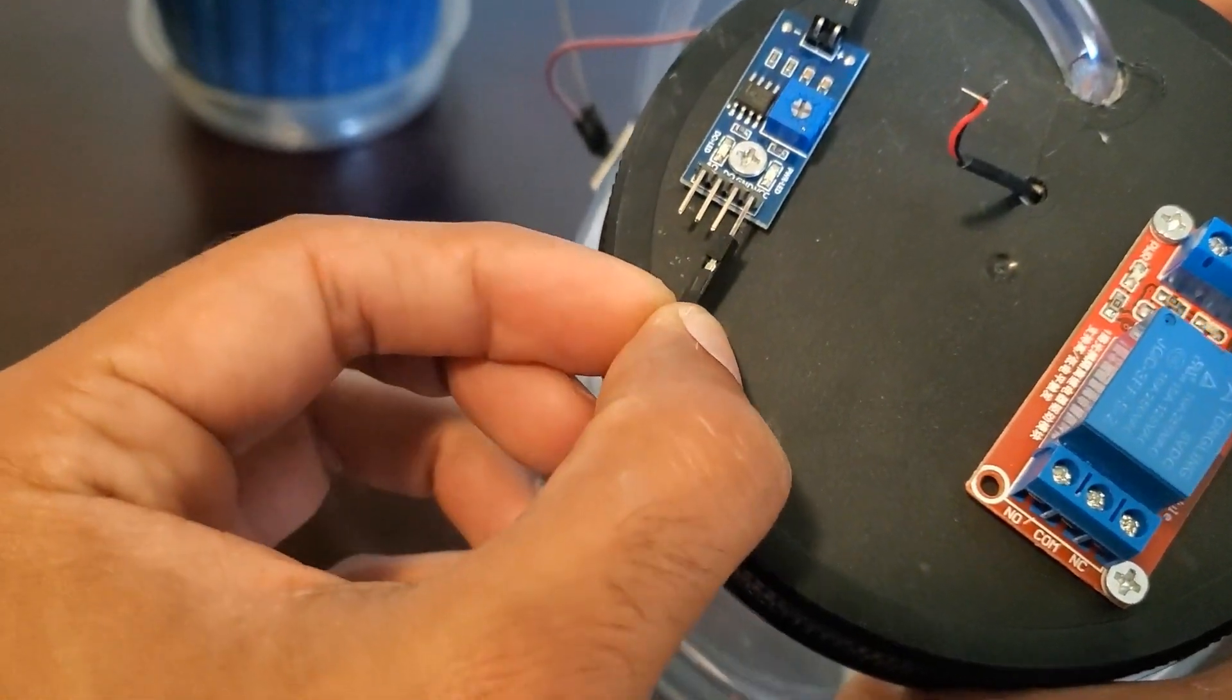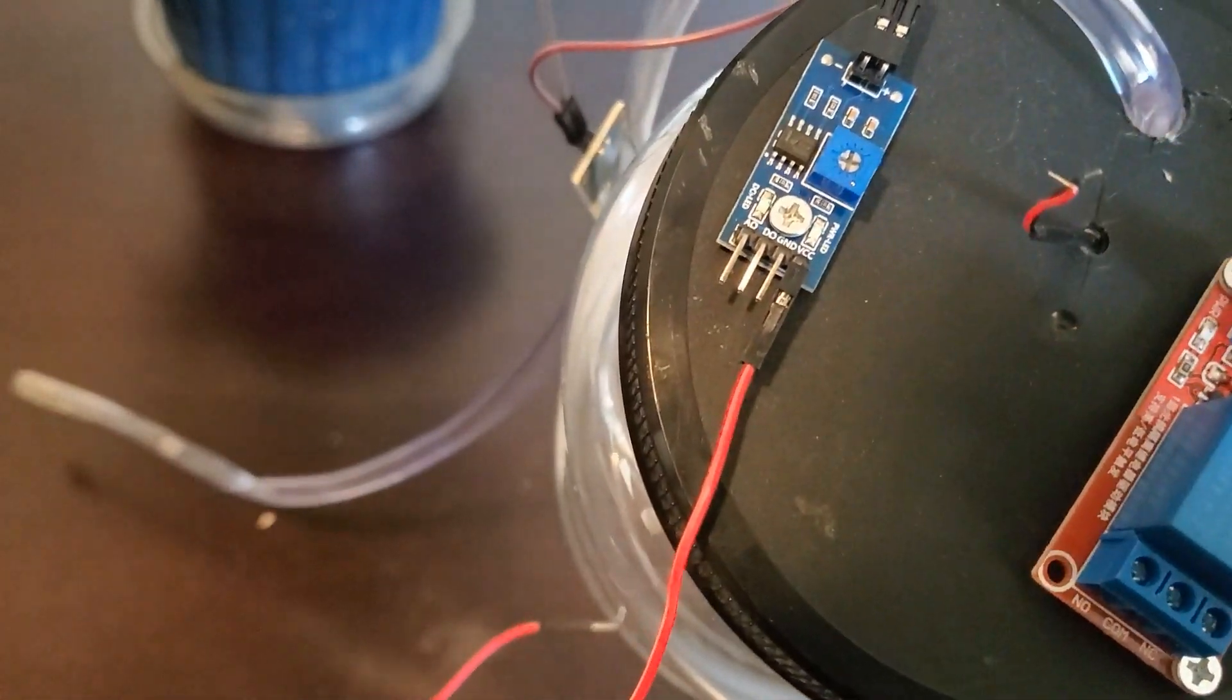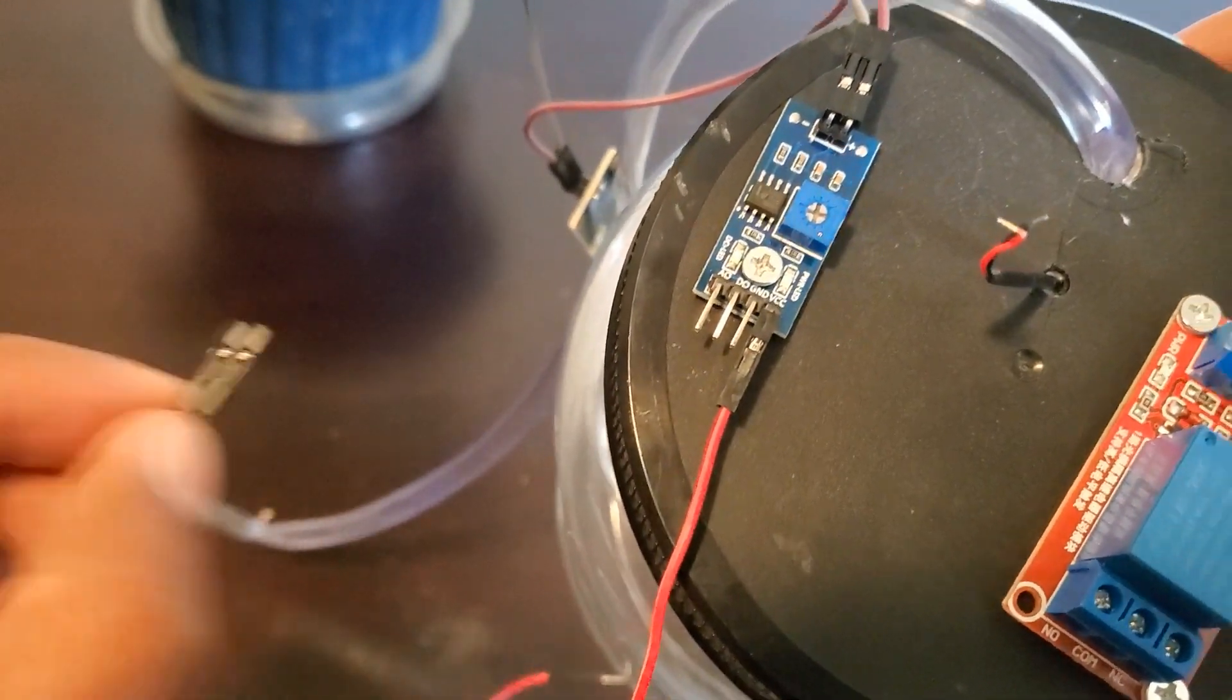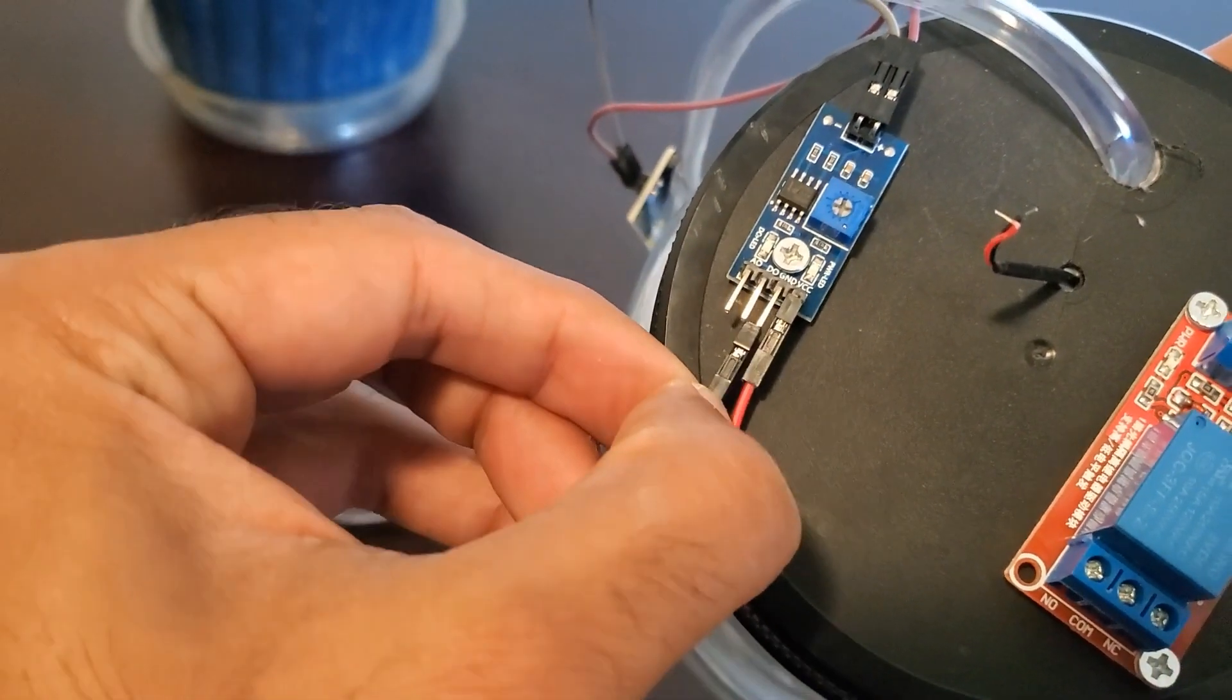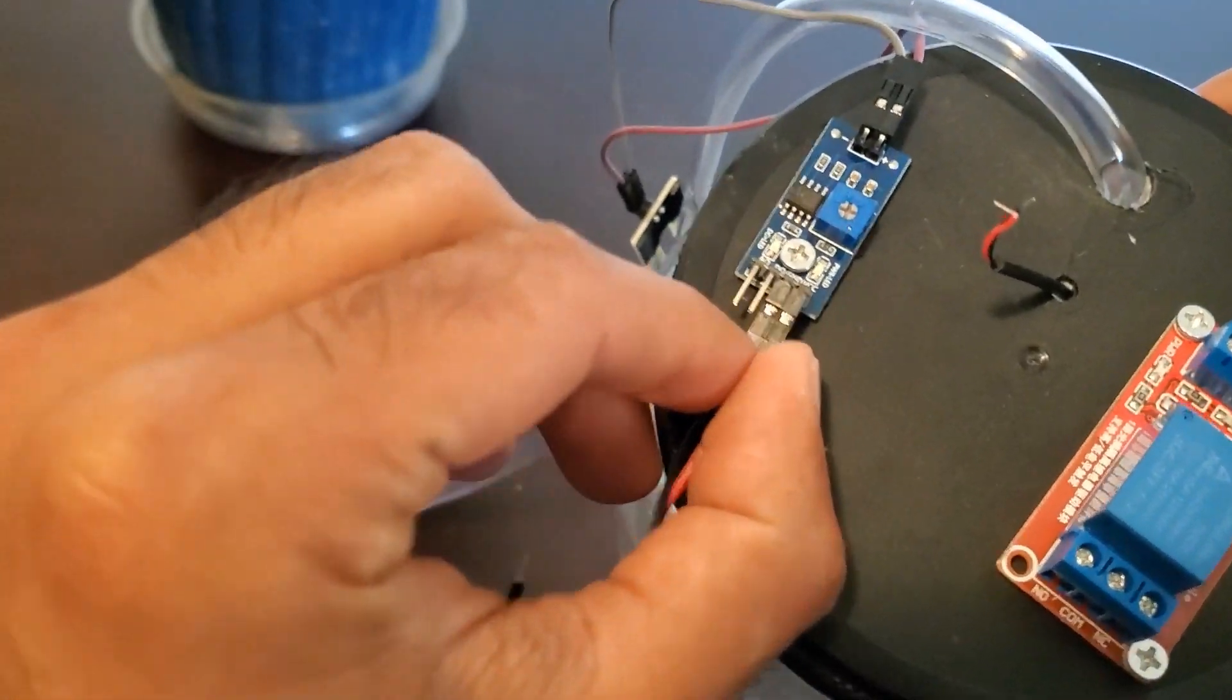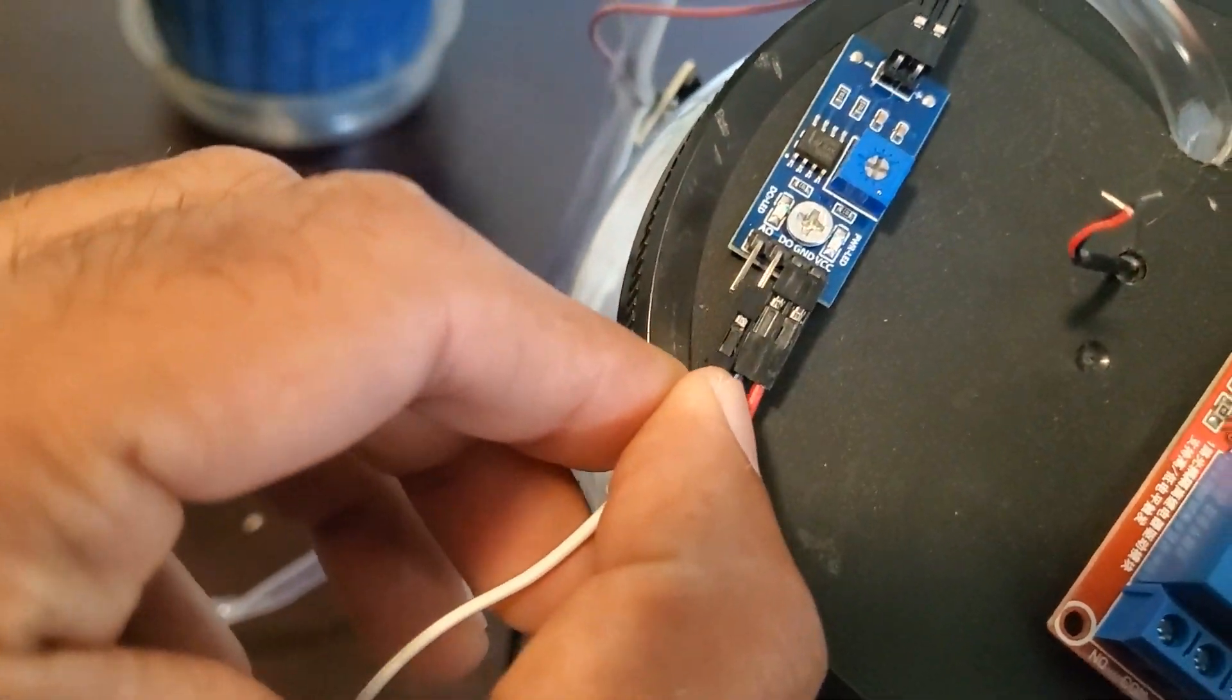On the other side of the soil sensor PCB, wire a red jumper wire to the VCC, a black to the ground, and a white to the digital output. The analog output will remain empty.